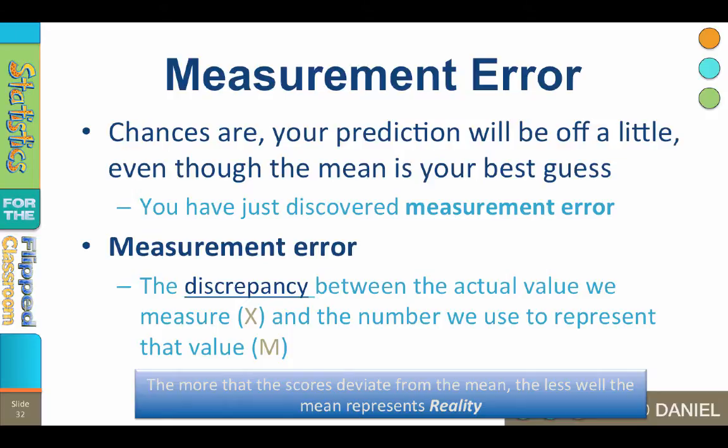You use the mean to predict that a player will be 5 foot 10, but in reality he's 6 foot 0. You now have 2 inches of measurement error. Still, despite the error, the mean, M, is always your best guess.